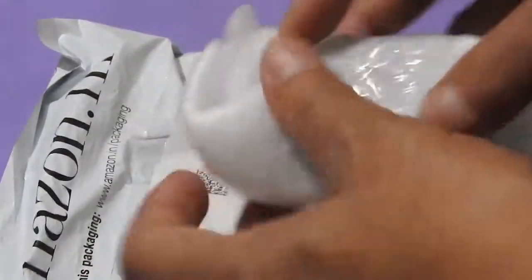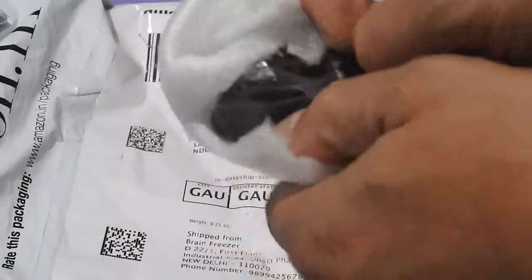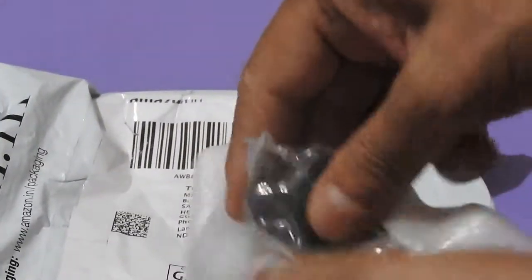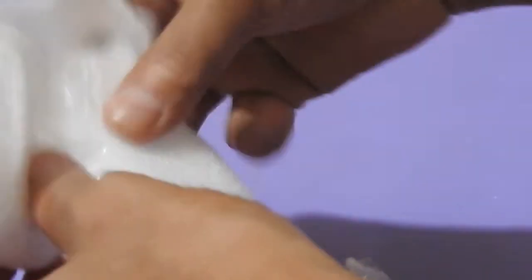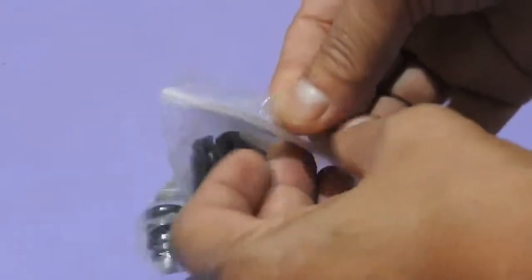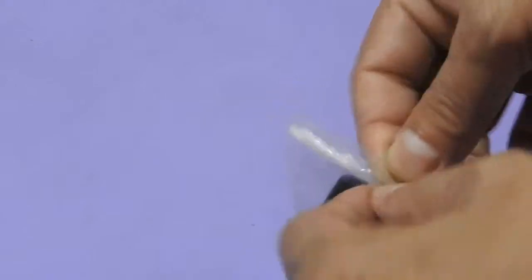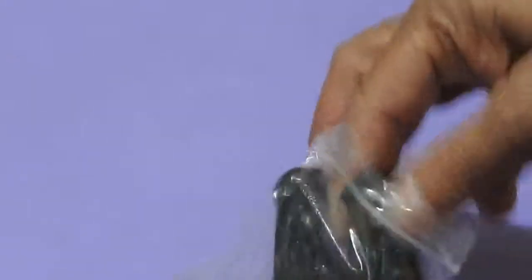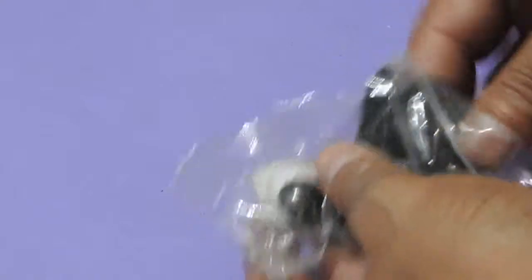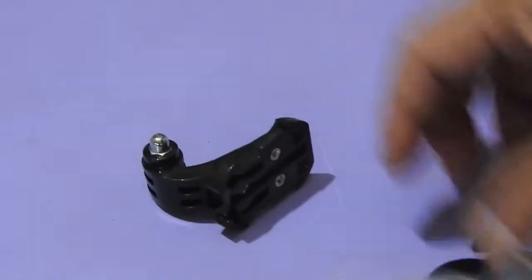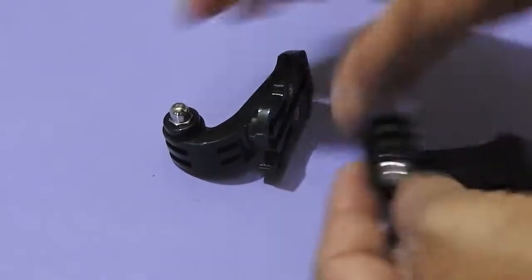a J-hook buckle for my GoPro camera. Let me check whether there is any bill inside. No, there is no bill inside. It's a very ordinary thing, so let me open it up, let me open the plastic bag.